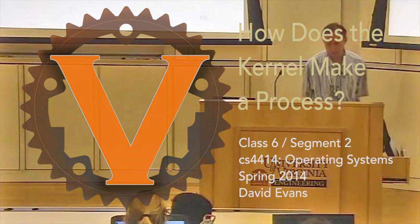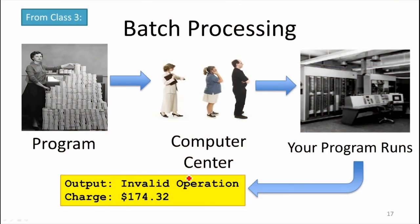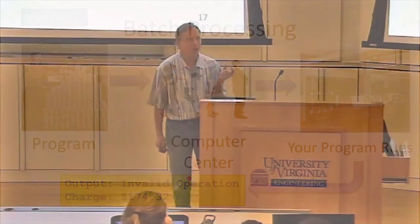How does the kernel make a process? Remember the model introduced in class 3? The goal of a process is to provide each program the illusion that it owns the whole machine while it's running. The way we do that depends on two things: getting some share of the processing time, and giving each program its own isolated memory so other programs don't affect what it's doing.